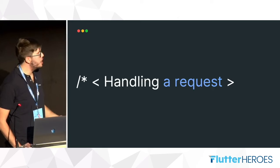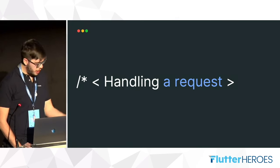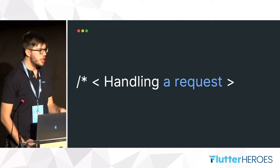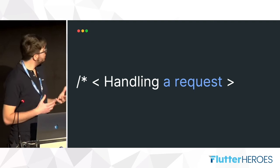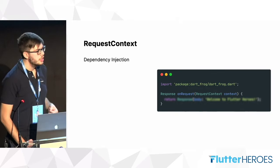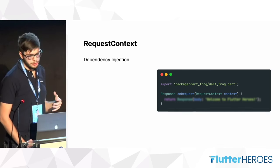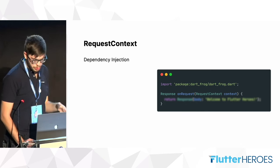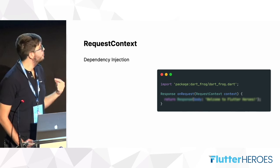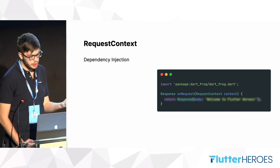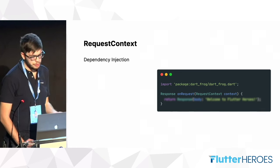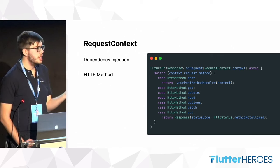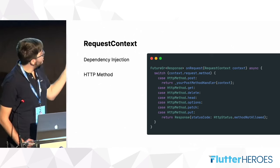We've seen the basic API of Dart Frog, and now we can try to handle some requests. The request context is the fundamental part of handling a request. It provides dependency injection via the provider and brings all the information about the request. Inside the request context, we're able to retrieve the HTTP method and change the behavior of our route based on that. In this example, we're managing the POST method and returning a method-not-allowed response for others.